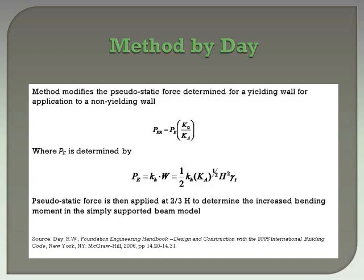The second method is the method presented by Day. This method involves modifying the dynamic thrust determined for a yielding retaining wall so that it can be applied to a non-yielding wall. This is done by simply multiplying the yielding wall thrust by the ratio of the at-rest coefficient of earth pressure to the coefficient of active earth pressure. This thrust is then applied at a distance of two-thirds the wall height above the base.